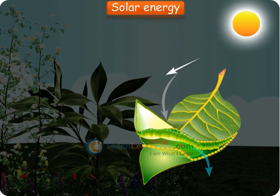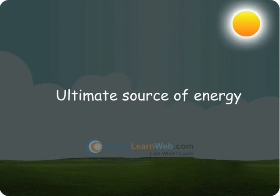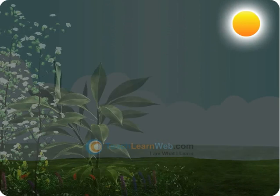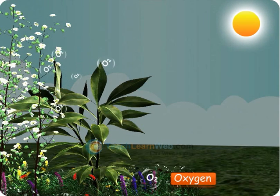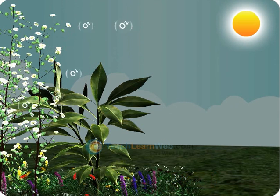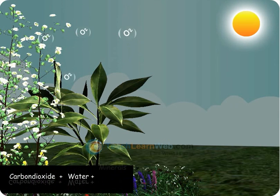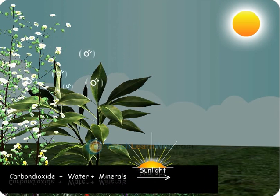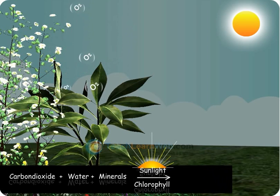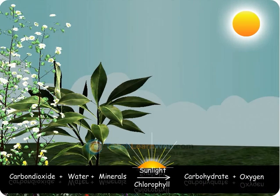The Sun is said to be the ultimate source of energy. Photosynthesis releases oxygen, which is the principal element of life. In the process: carbon dioxide plus water plus minerals, in the presence of sunlight with the pigment chlorophyll, synthesize carbohydrates which are the energy sources, and oxygen which is released into the atmosphere.